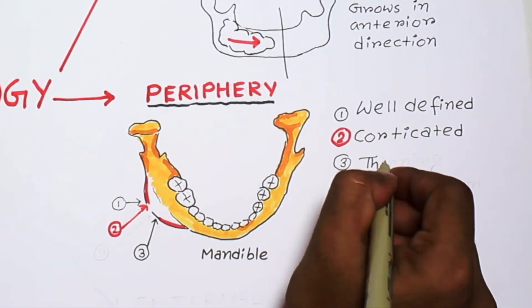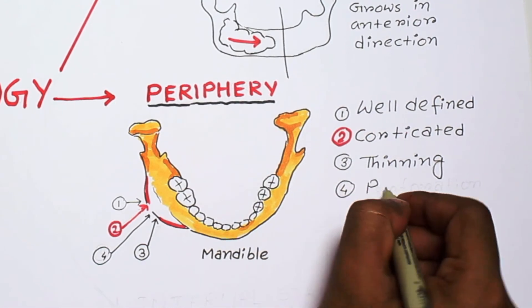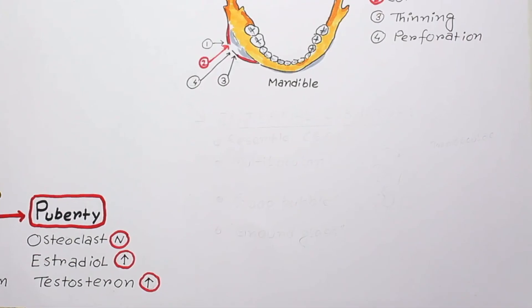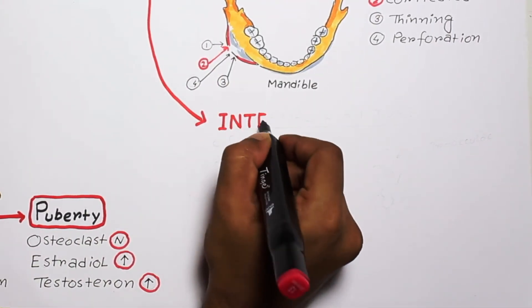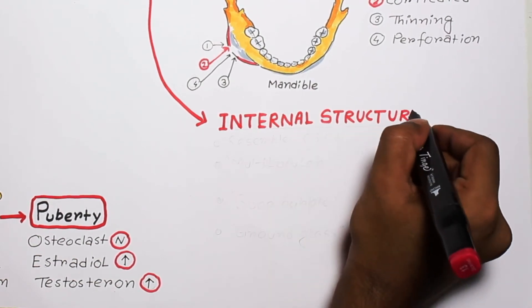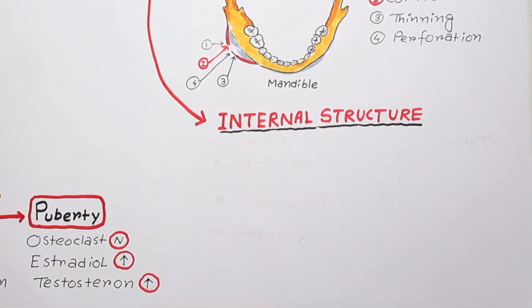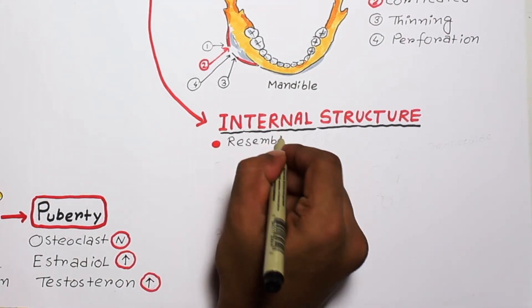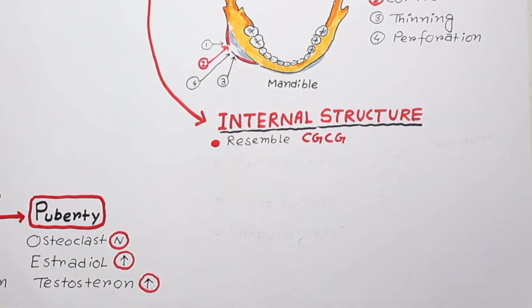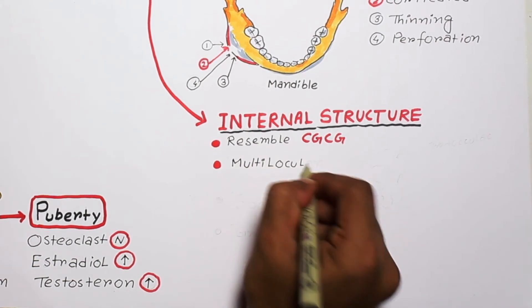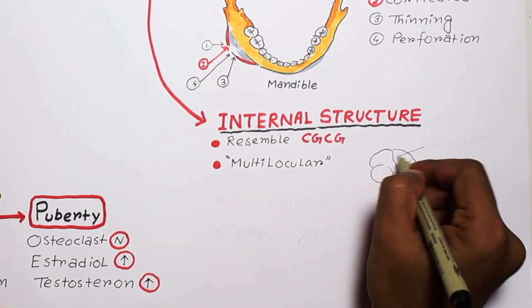Now internal structures, which actually resembles CGCG or central giant cell granuloma. It is a multilocular lesion with fine granular trabeculae forming a prominent multilocular pattern.